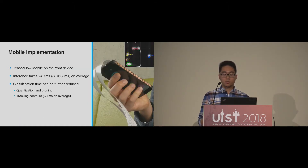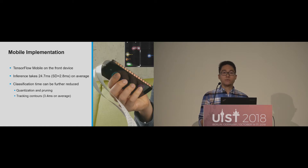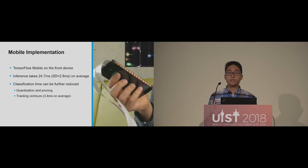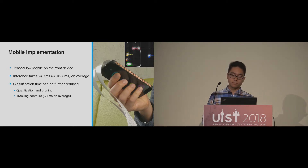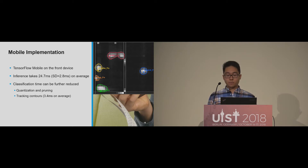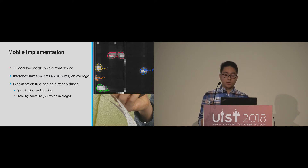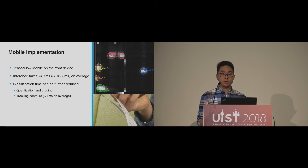We deployed the model on our prototype using TensorFlow Mobile on the front unit. One inference takes 24.7 milliseconds on average, enabling the model to run in the background and estimate finger positions for each frame. Techniques such as quantization or pruning could further reduce runtime for a small loss of accuracy. Alternatively, we could assign estimated finger positions to the closest blob in the capacitive image and then just track the blob, reducing workload since model inference is only needed when new blobs appear. Our simple tracking algorithm using OpenCV takes 3.4 milliseconds on average instead of the 24.7 milliseconds for model inference.